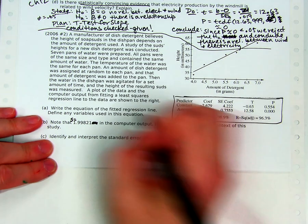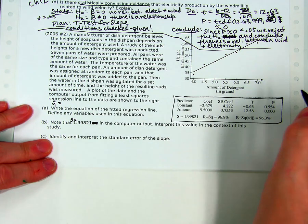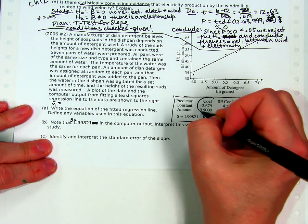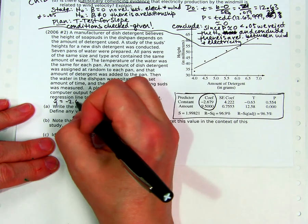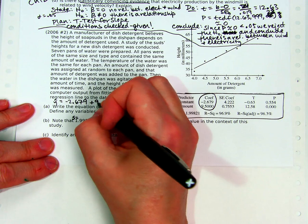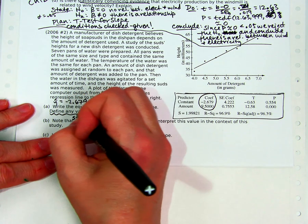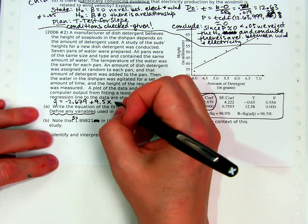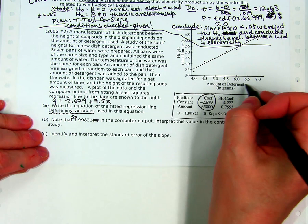Part A, write an equation of the fitted line. I'm going to do that here since I didn't need much room. y hat equals negative 2.679 plus 9.5x. They're reminding you to define the variables, that's nice of them. x is the amount of detergent.